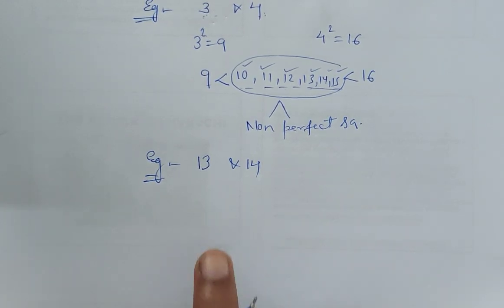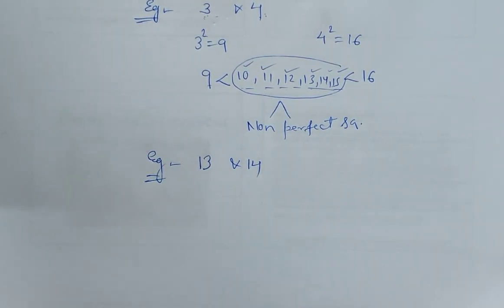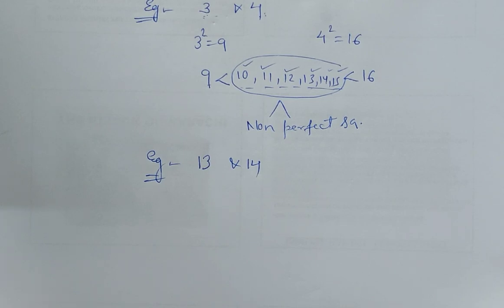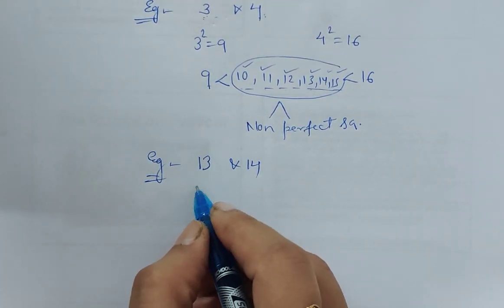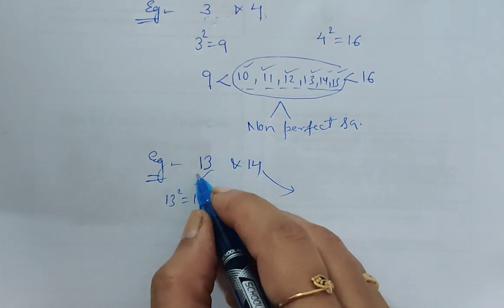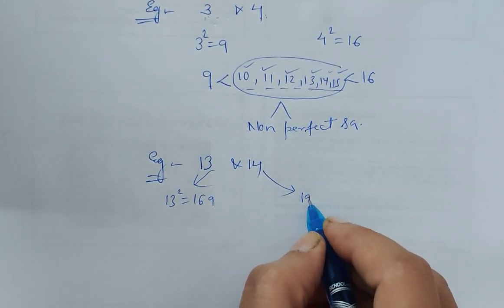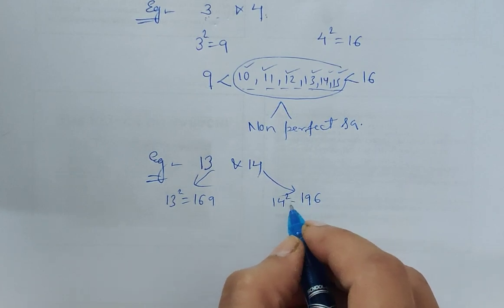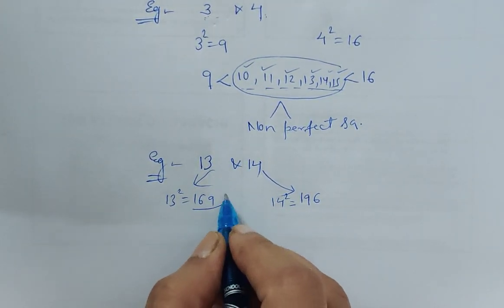The square of 13 is 169, and the square of 14 is 196. Will it be that feasible for us to write all those numbers that come after 169 and before 196?